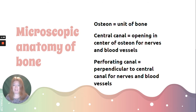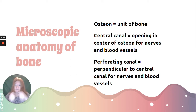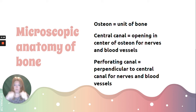Now let's talk about the microscopic anatomy. We have osteons — an osteon is a unit of bone. In the center of the osteon is the central canal, which is an opening for nerves and blood vessels. That's why when you fracture a bone, it hurts — we have nerves running through the osteons — and it also bleeds because they're filled with blood vessels. Then we have perforating canals, which are perpendicular to the central canal, and they bring nerves and blood vessels in that direction.